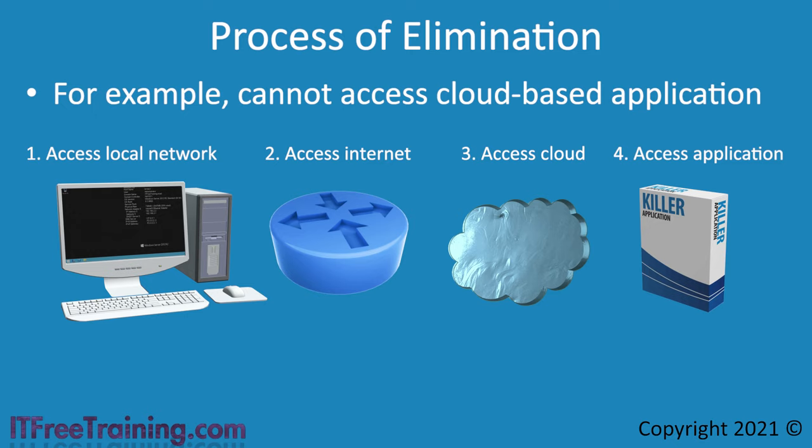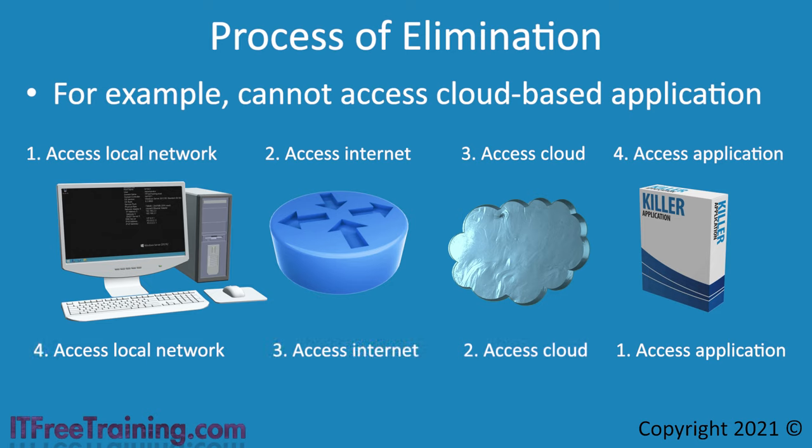You may be thinking: could this be done in reverse? Could you check the application first, then the cloud, then the internet, then the local network? The answer is yes — there is no right or wrong order. In fact, you could start in the middle by checking the internet first. The point to remember is that this is a process of elimination. You want to figure out what is working and what is not. Different IT technicians will work in a different order, and depending on the problem, your approach may vary. Work out what works and what does not, and that will lead you to the cause.